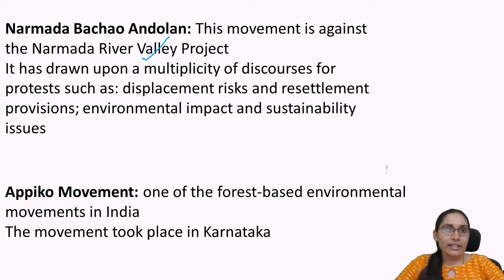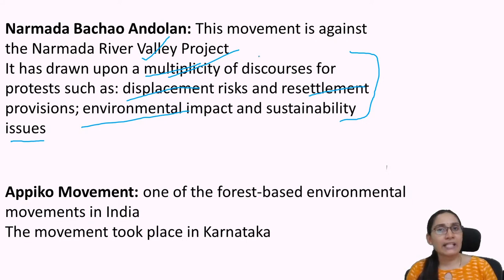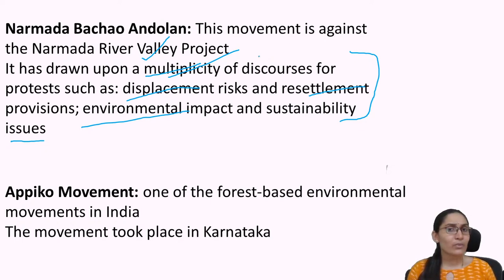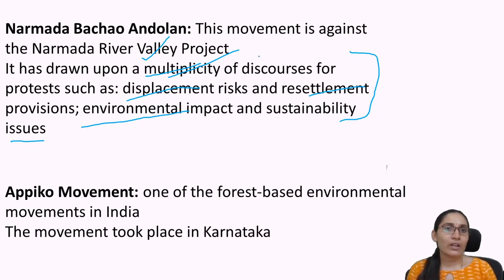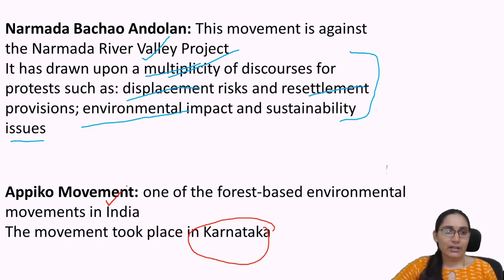The Narmada Bachao Andolan was against the Narmada River Valley Project. It was drawn up on multiple discourses of protest: displacement risk, resettlement provisions, environmental impact, and sustainability issues. The displacement of the local population was a major concern. The Apico movement is one of the forest-based environmental movements in India, based in Karnataka. With this we have completed module six of unit nine.